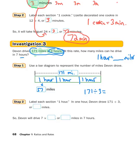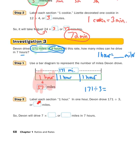This is key: if you know each hour took 57 miles, we can use that to answer this question. Step two says label each section one hour. In one hour, Devin drove 171 divided by three, or 57 miles — we figured that out. How would you figure out seven hours? You take those seven hours and multiply times 57. Type it in — seven times 57. You should get 399 miles in seven hours.